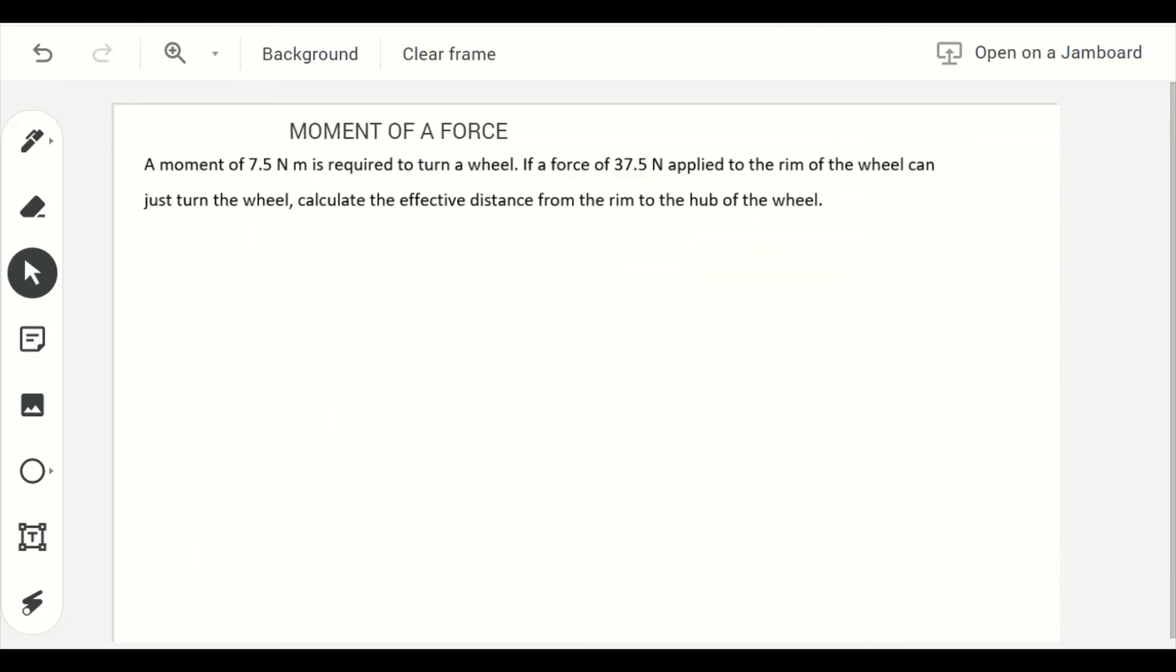Let's look at an example of how we can apply moment of a force. The question on your screen is: a moment of 7.5 newton meters is required to turn a wheel. If a force of 37.5 newtons applied to the rim of the wheel can just turn the wheel, calculate the effective distance from the rim to the hub of the wheel.